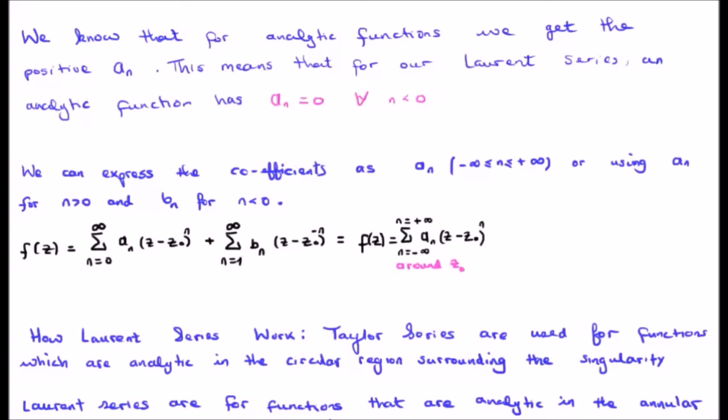We can express the coefficients as a sub n going from negative to positive infinity, or using a sub n for n greater than zero and b sub n for n less than zero as I have done here. Two different ways of writing it: using a single a sub n and extending from negative to positive infinity, or using b sub n. Which you use is entirely up to you. Why is this useful you might be wondering? Don't worry, it's something we're going to address very shortly.